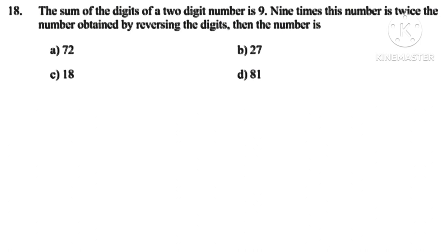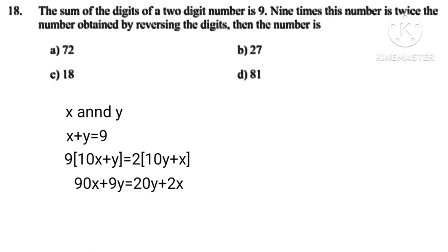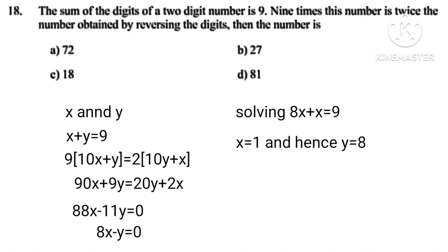Let units and tens place be X and Y. Therefore, according to the given condition, X plus Y equals 9. And 9 times 10X plus Y equals 2 times 10Y plus X. 90X plus 9Y equals 20Y plus 2X. 88X minus 11Y equals 0, or 8X minus Y equals 0. Solving X plus 8X equals 9 implies that X equals 1. Hence Y equals 8. Therefore, the required number is 18.